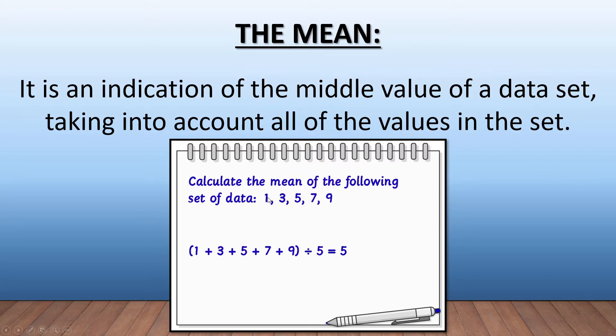We're going to add those numbers together and divide it by 5. Why? Because there's one, two, three, four, five values in this set, and that gives us our answer of 5.